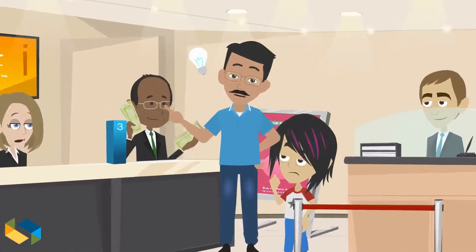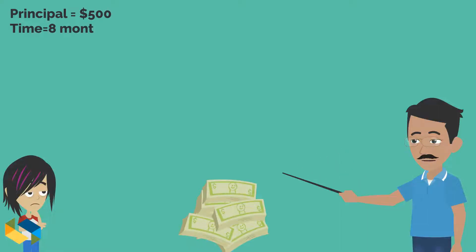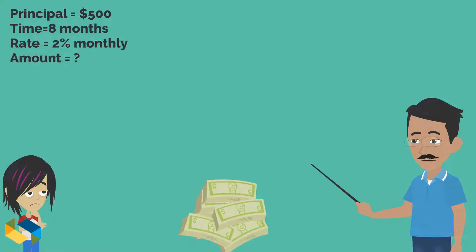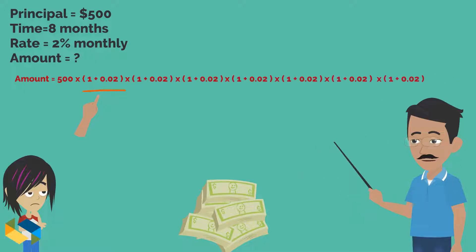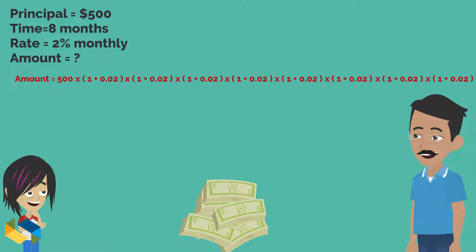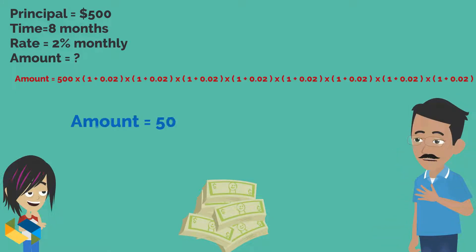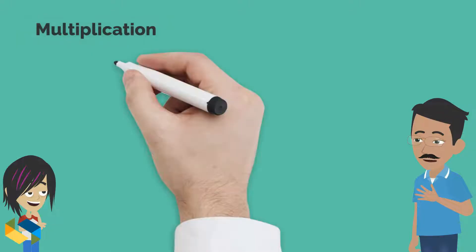I just made a deposit of five hundred dollars. Do you know how much I will make at the end of eight months at 2% interest rate compounded monthly? The expression looks like this — I have to keep multiplying this term with itself eight times over to get the answer. Isn't it a bit too unmanageable? Now compare with the same expression written using exponents — see how simple it becomes!